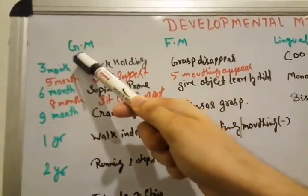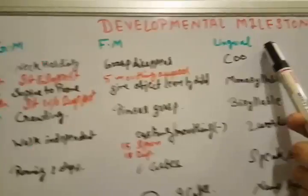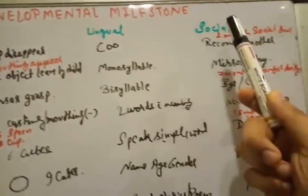I am going to explain you gross motor development, fine motor development, lingual and social development according to the age.